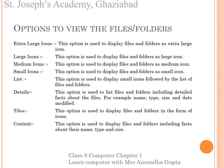Number 4, Small Icons: this option is used to display files and folders as small icons. Number 5, List: this option is used to display small icons followed by the list of files and folders. Number 6, Details: this option is used to list files and folders including detailed facts about the files, for example name, type, size and date modified.